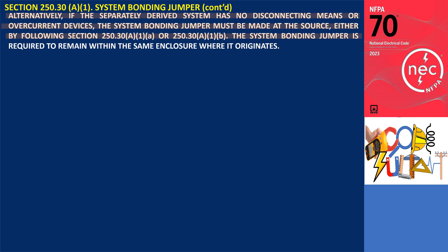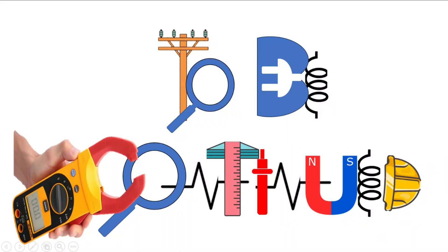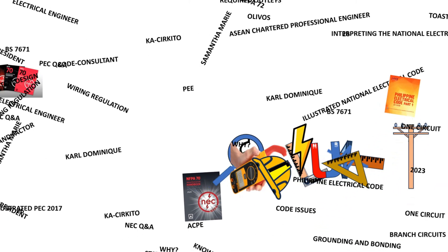The system bonding jumper is required to remain within the same enclosure where it originates. However, if the source of the separately derived system is located outside the building or structure being supplied, a system bonding jumper must be installed at the grounding electrode connection, as per section 250.30 C. Thank you all for watching.